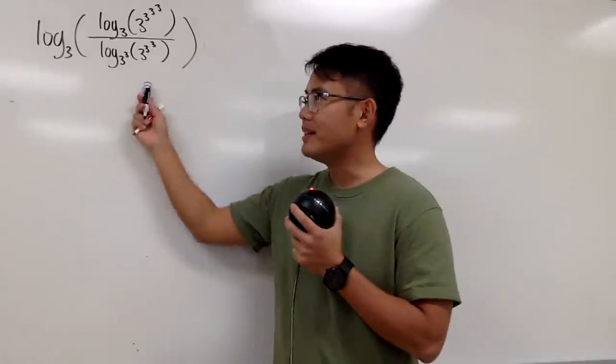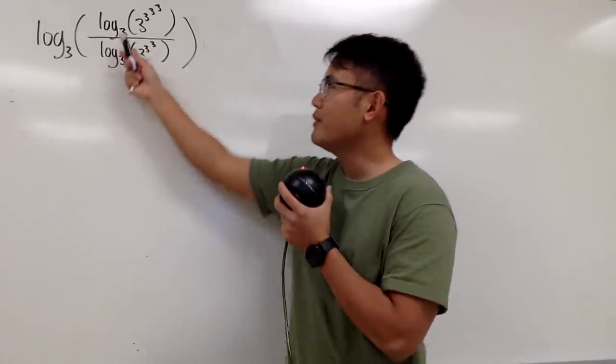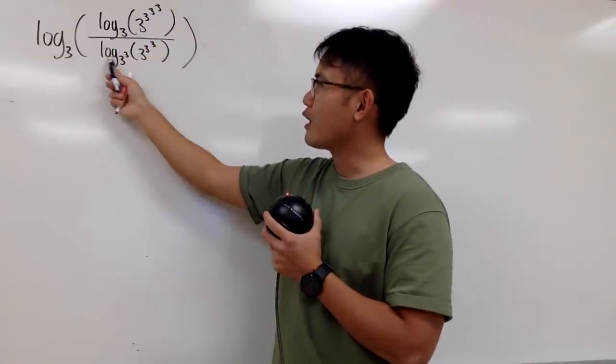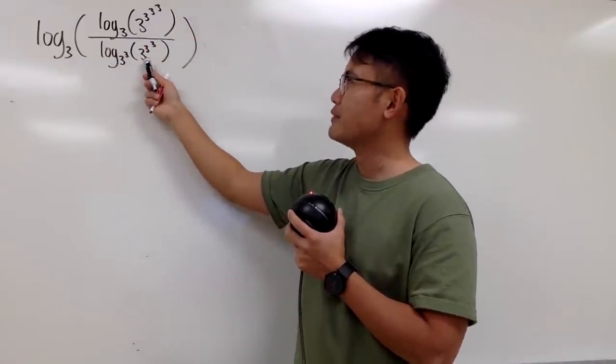Okay, that's what I'm going to find here. We are going to calculate this. We have log base 3 of log base 3 of 3 to the 3 to the 3 to the 3, and then over log base 3 to the 3, and inside here we have 3 to the 3 to the 3.